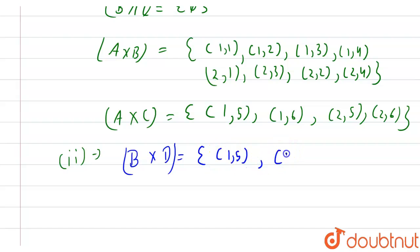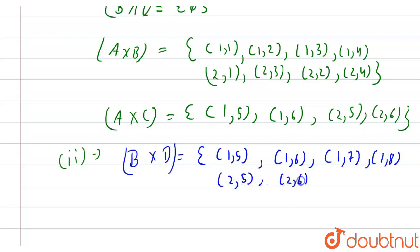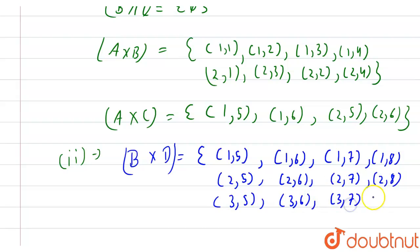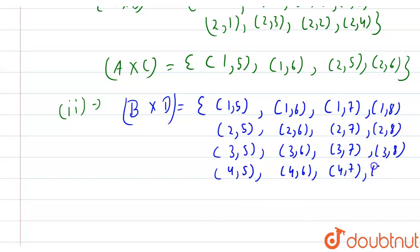So the complete set B×D = {(1,5), (1,6), (1,7), (1,8), (2,5), (2,6), (2,7), (2,8), (3,5), (3,6), (3,7), (3,8), (4,5), (4,6), (4,7), (4,8)}.